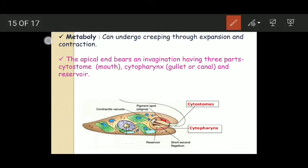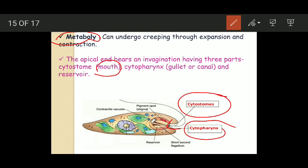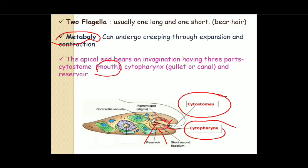Metaboly is another important feature associated with euglenoids. Metaboly means these organisms can undergo creeping. They can creep into small crevices through expansion and contraction. Their body is capable of expansion and contraction because of which they can creep into small structures. The apical end of the body bears a small invagination. This small invagination has three parts. The first one is cytostome, basically acting as the mouth. Then we have cytopharynx, inner to cytostome. And this cytopharynx is a gullet or canal. And finally the reservoir.